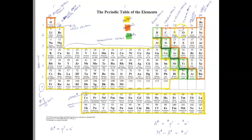Everything to the right-hand side, including hydrogen, are the non-metals. They have characteristics that are opposite of metals. Everything to the left of the metalloids, including the bottom section from numbers 58 all the way to 103 — which would be placed between periods 6 and 7 on the main table — are all metals.